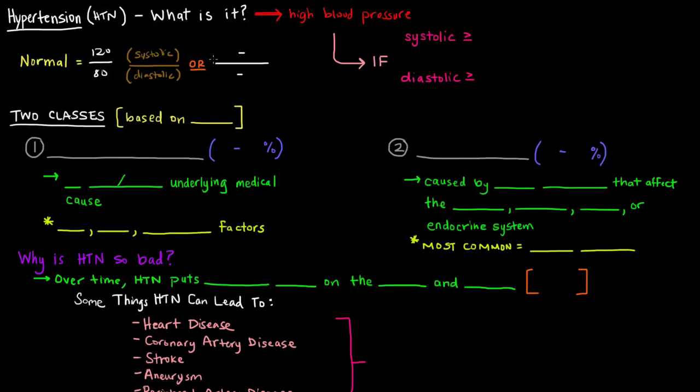The range for normal blood pressure, as not all people will have exactly 120 over 80, the typical normal range is 100 to 139 millimeters of mercury over 60 to 89 millimeters of mercury. So this is considered to be the normal range.